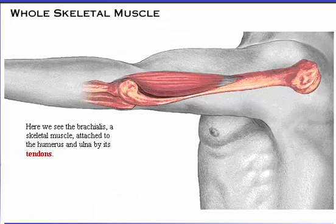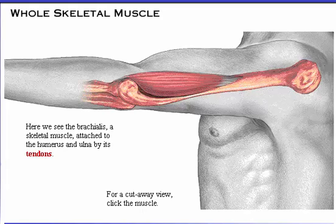Here we see the brachialis, a skeletal muscle attached to the humerus and ulna by its tendons.